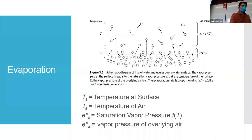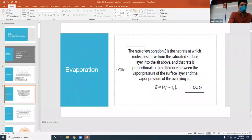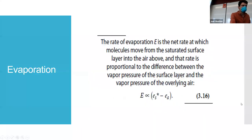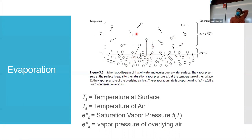Let's talk about the actual process of evaporation on a physical level. We've got a surface of water here, and these are all the little water molecules on it. Water molecules are jumping into the air and coming out — we talked about this when we discussed condensation. Those water molecules in the air create a vapor pressure, which is the partial pressure of water vapor in the atmosphere.